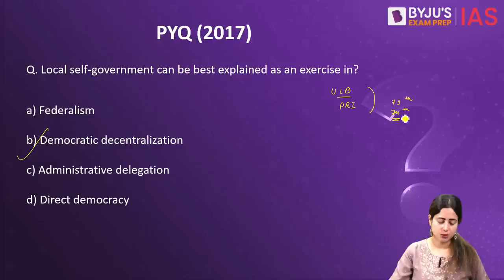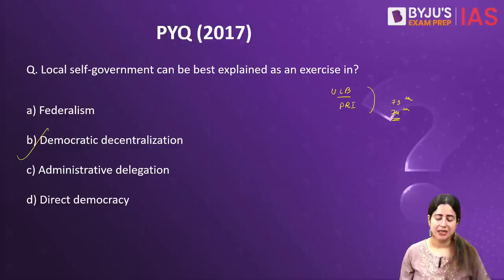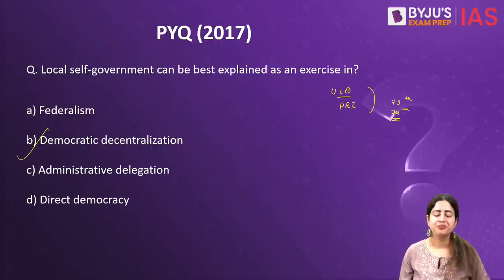Under this, at the grassroot level in villages, the Panchayati Raj institutions happen to be a forum for giving voice for self-governance to local people. Similarly, in cities, urban local bodies — including municipal corporations, notified area committees, or cantonment boards, depending on the size of the city or town — serve this purpose, making B the correct answer.